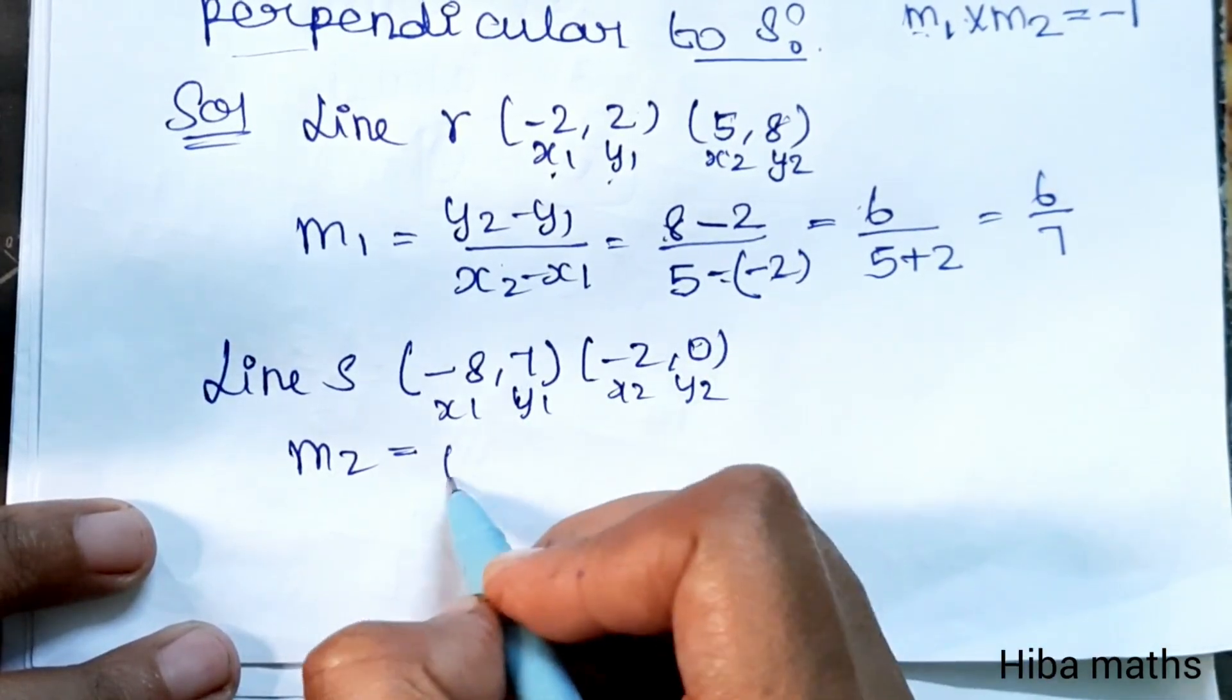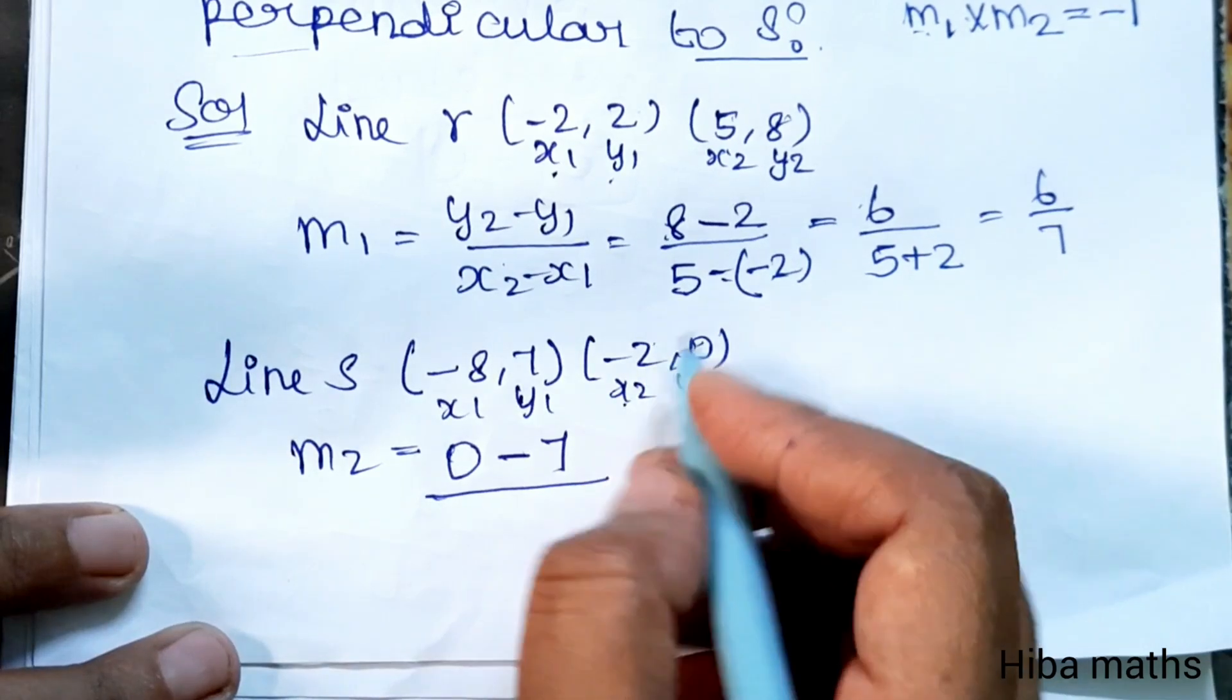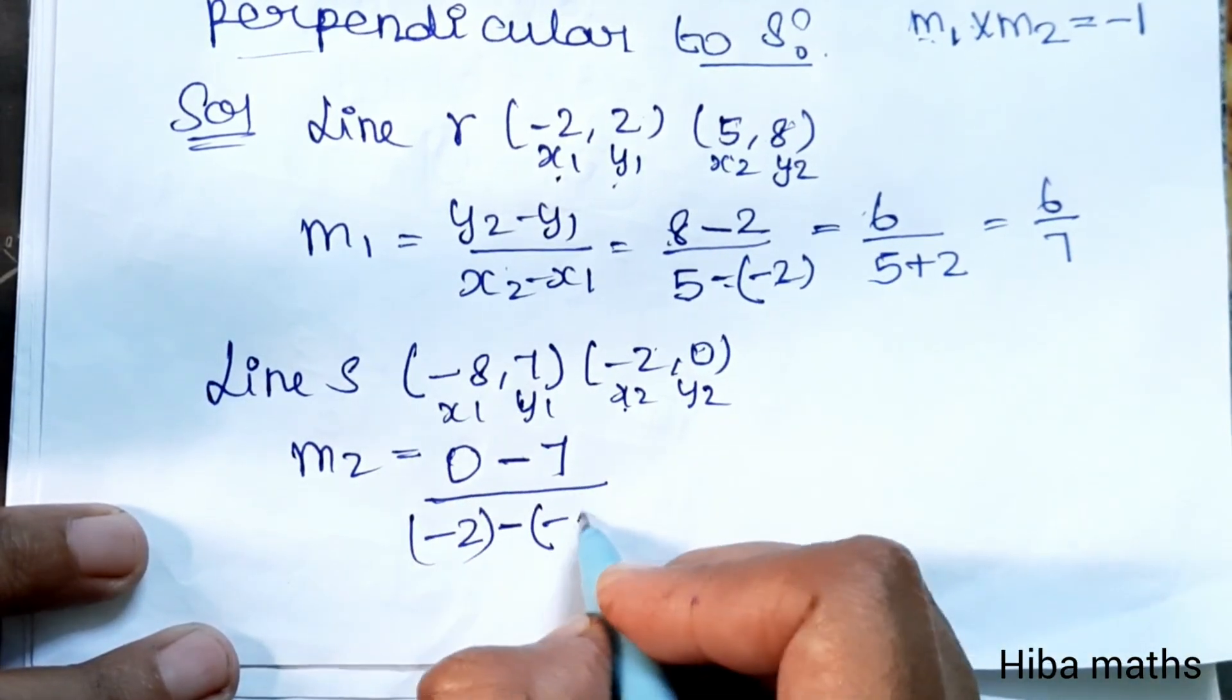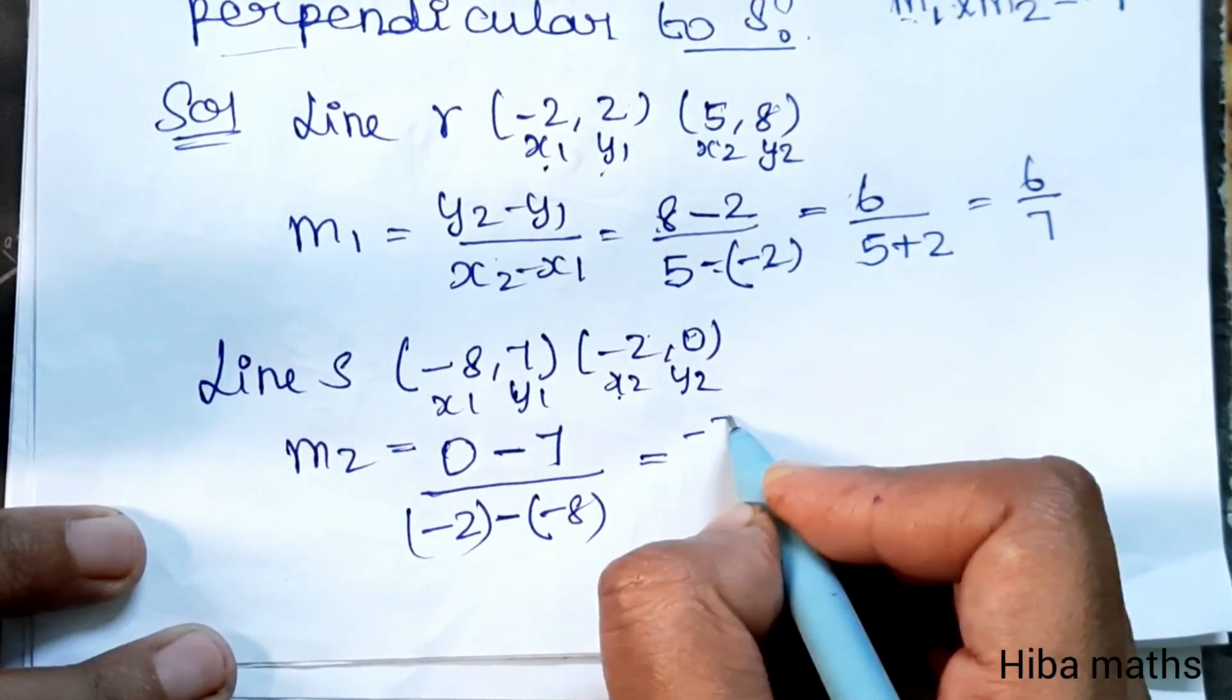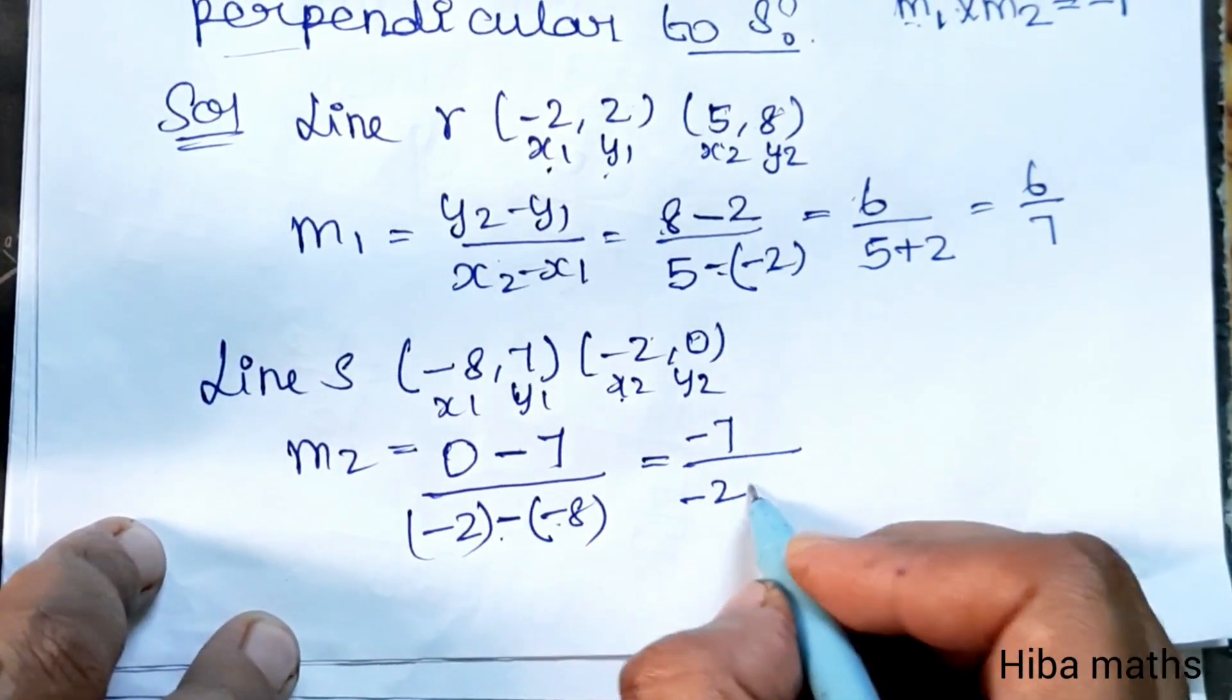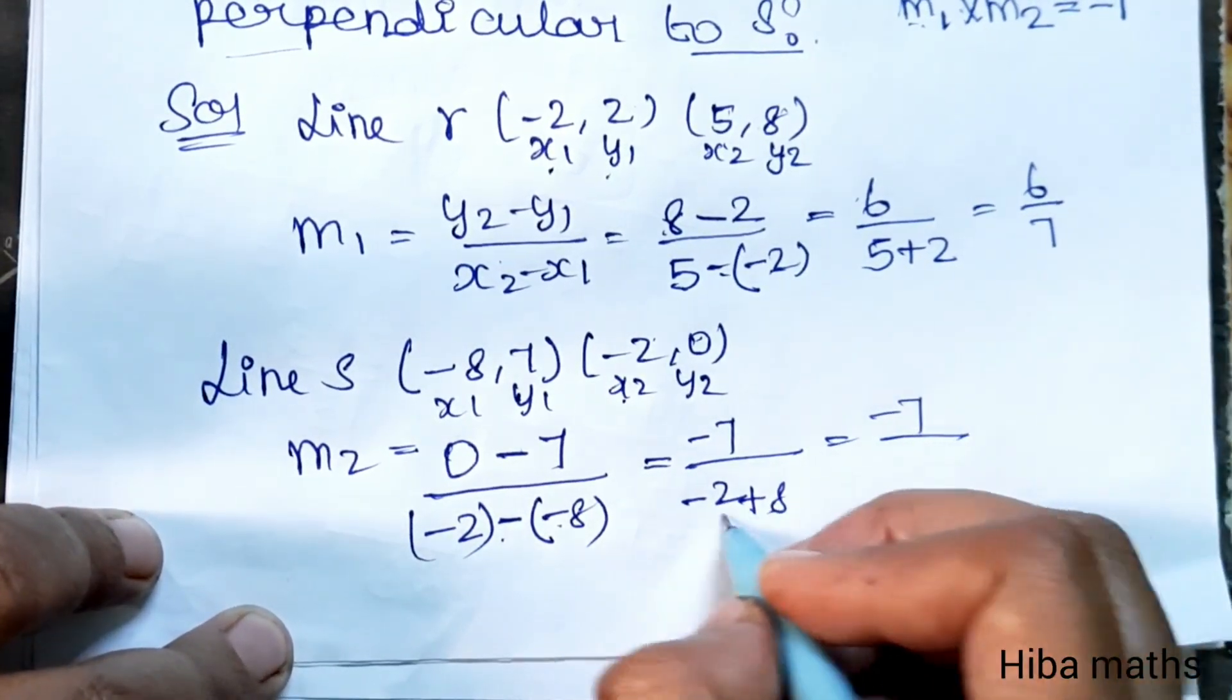Line S passes through points (-8, 7) and (-2, 0). M2 equals 0 minus 7 divided by -2 minus (-8). That's -7 divided by 6, so M2 equals -7/6. The condition is M1 times M2 equals -1.